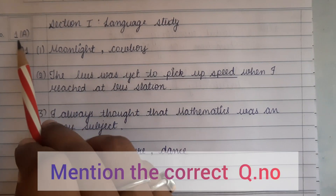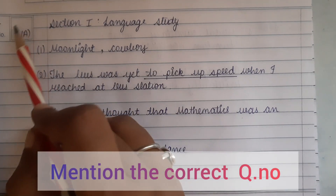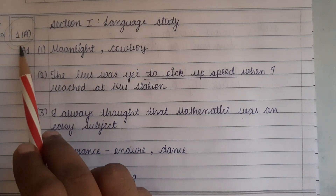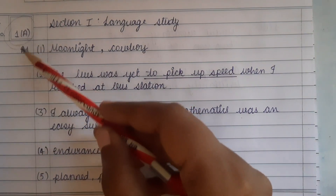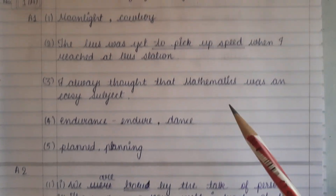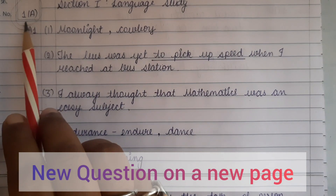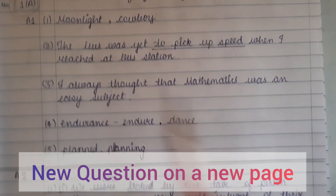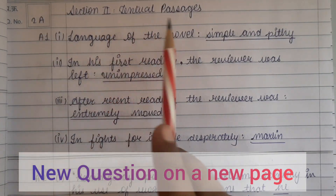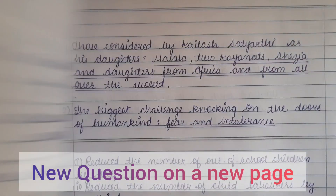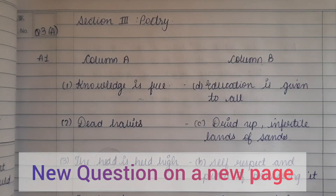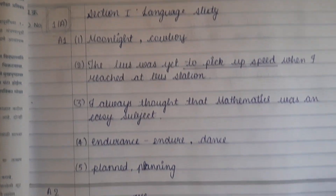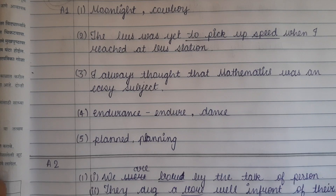Next thing is that you are going to mention the question number for each question — do not forget this. Agar aapne kahin par bhi question number likhna bhool gaye hain, the examiner might not give you the exact marks, ya phir shayad aapko marks hi na de. So question number mention karna bahut zaroori hai. You can mention sub-questions like question number 1A and A1, question number 1A and A2. Sub-questions ko aap continue kar sakte hain usi page pe, but naye question ko ek naye page se shuru karna hai. For example, this child has written question number 1A on this sheet, and question 2A which is section 2 textual passage goes on a new page.